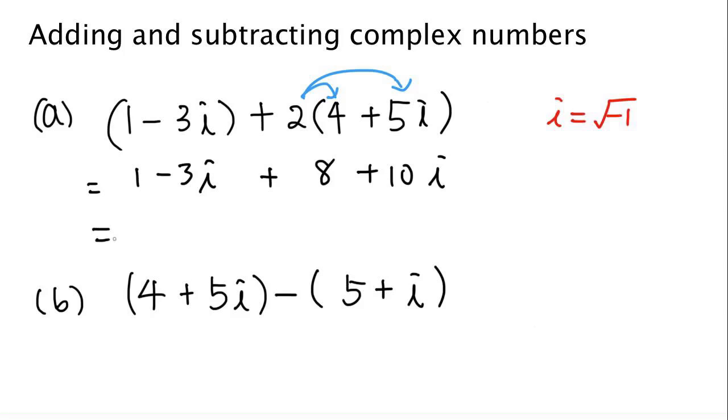And we combine just like terms. So here we have numbers 1 plus 8, they sum up to 9. And here we have negative 3i plus 10i. So negative 3 plus 10 is 7, so we have plus 7i.